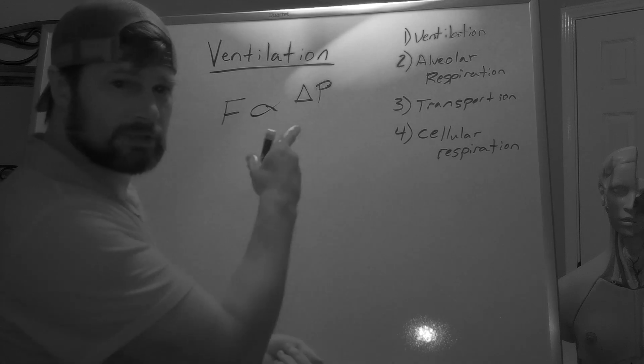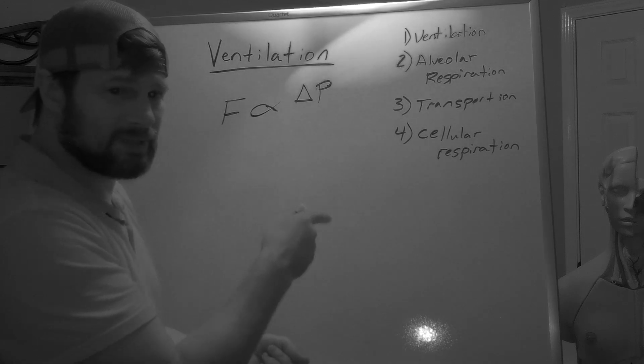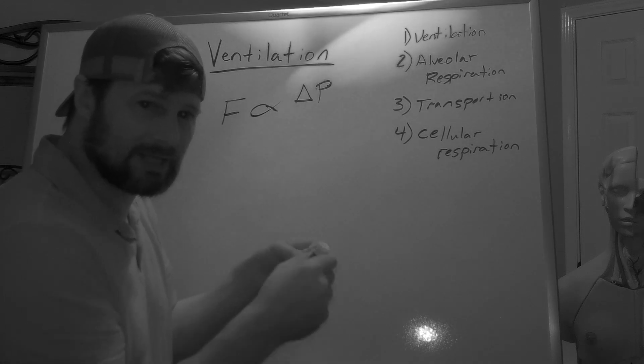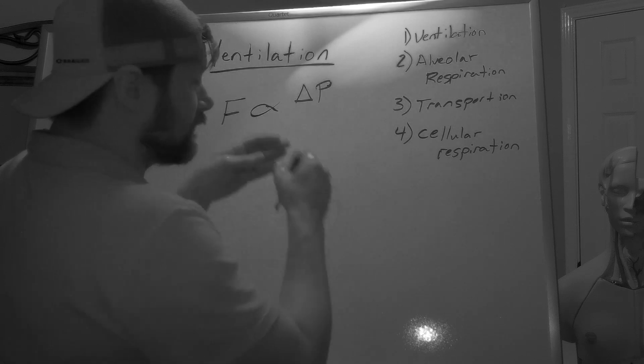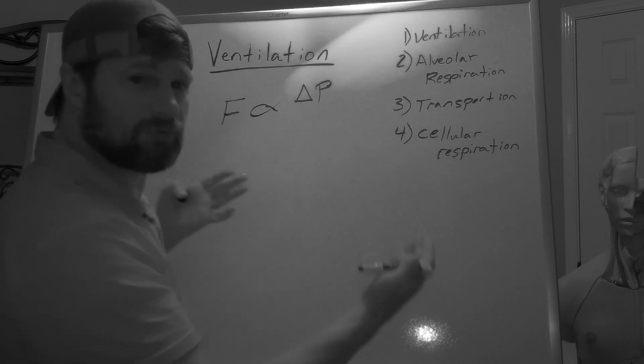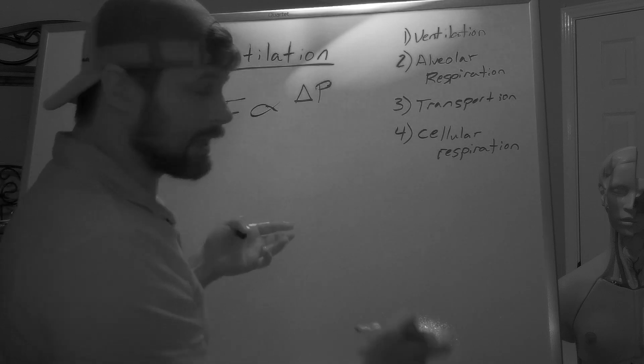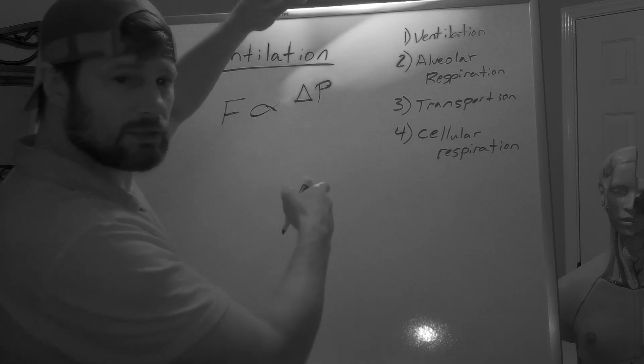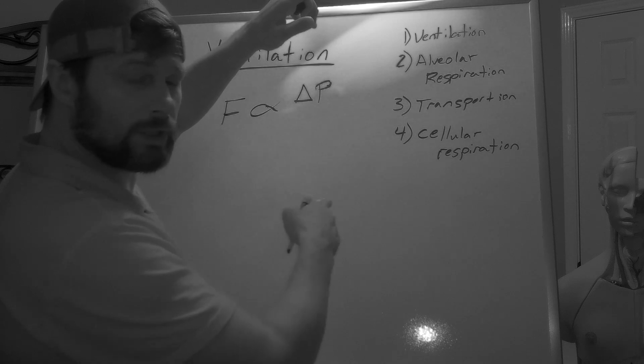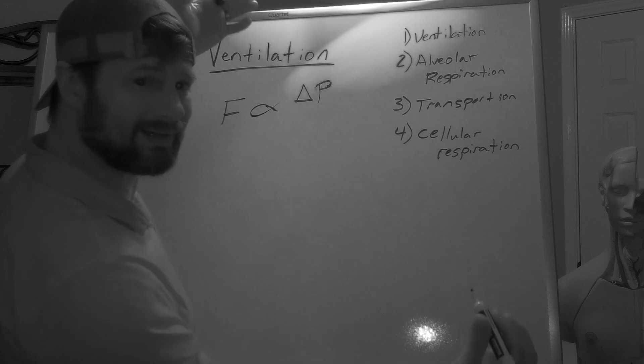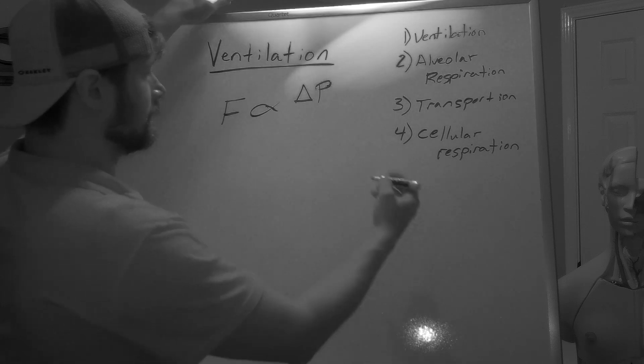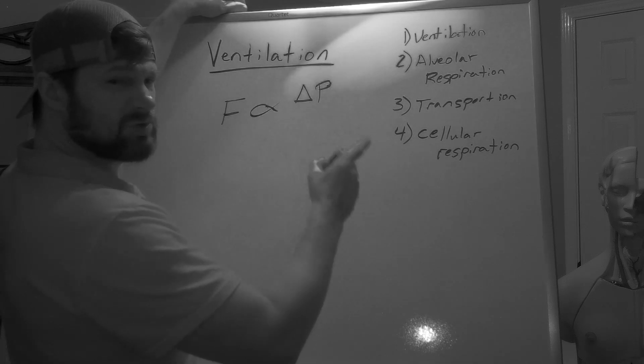That's going to determine air flow. If there's no pressure gradient, remember delta means difference between two sides. That is a gradient. If there's no pressure gradient, there's no air flow. However, the second we get a pressure gradient, now air can move from one area to the other. What direction is it going to go? Always from an area of high to an area of low.